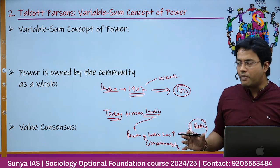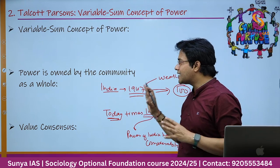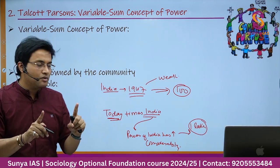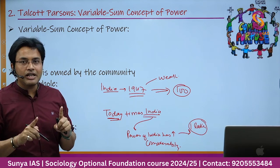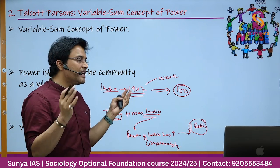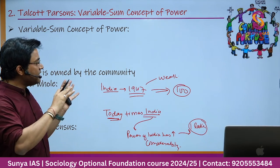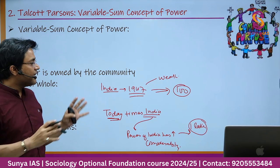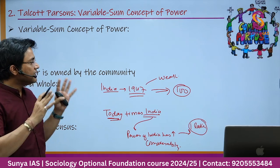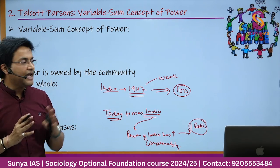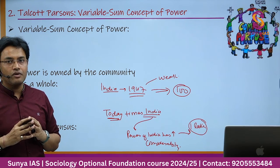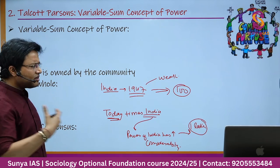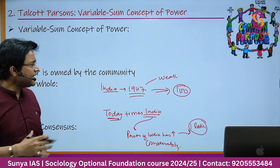To recap the variable sum concept of power: power is owned by the community as a whole, and there must be value consensus. Without value consensus you cannot have a collective goal, and only when everyone has a collective goal will they put their resources and efforts toward achieving it. When the collective goal is achieved, the power of the overall society increases; if it is not achieved, the power decreases.